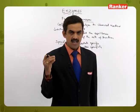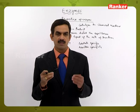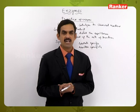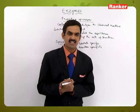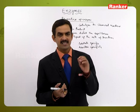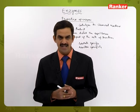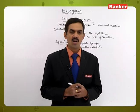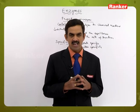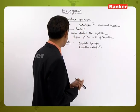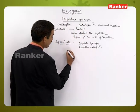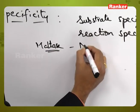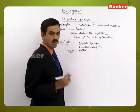If an enzyme is taking part in a particular type of reaction, it will speed up that reaction and act as a catalyst only for that reaction. Otherwise, if the same enzyme is used for other types of reactions or other substrate molecules, it will not show its catalytic ability. That is the specificity exhibited by enzymes. For example, maltase is an enzyme which will act on maltose only.